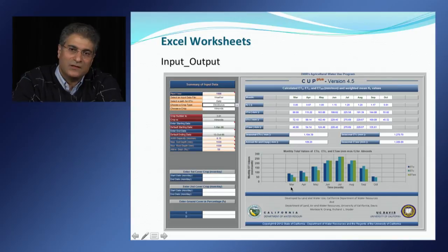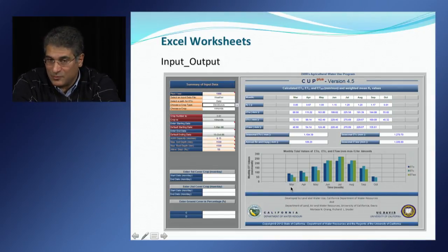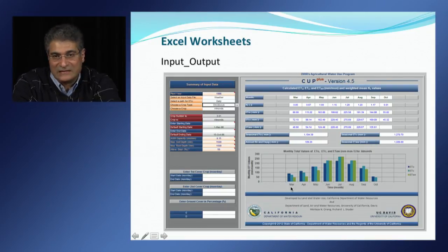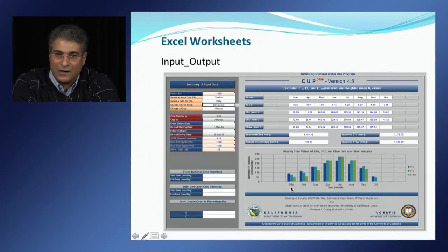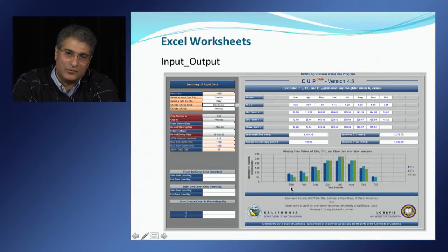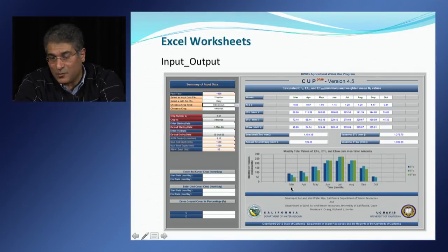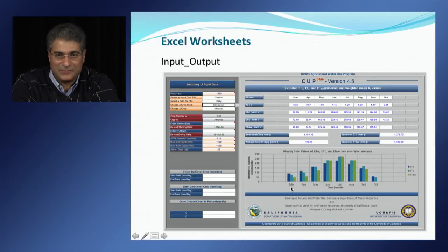The input-output worksheet is used for selecting weather, crop, and soil information for performing daily soil water balance to determine crop evapotranspiration and ET of applied water for agricultural crops and other surfaces within a study area. The cells on the left-hand side are used for selecting weather, crop, and soil information, and the cells on the right-hand side are used to view output values. Output consists of monthly-mean crop coefficient values, monthly-total reference evapotranspiration, monthly-total crop evapotranspiration, and monthly-total ET of applied water during the growing season. The program also provides a bar graph of these monthly totals for the currently entered crop and soil information.